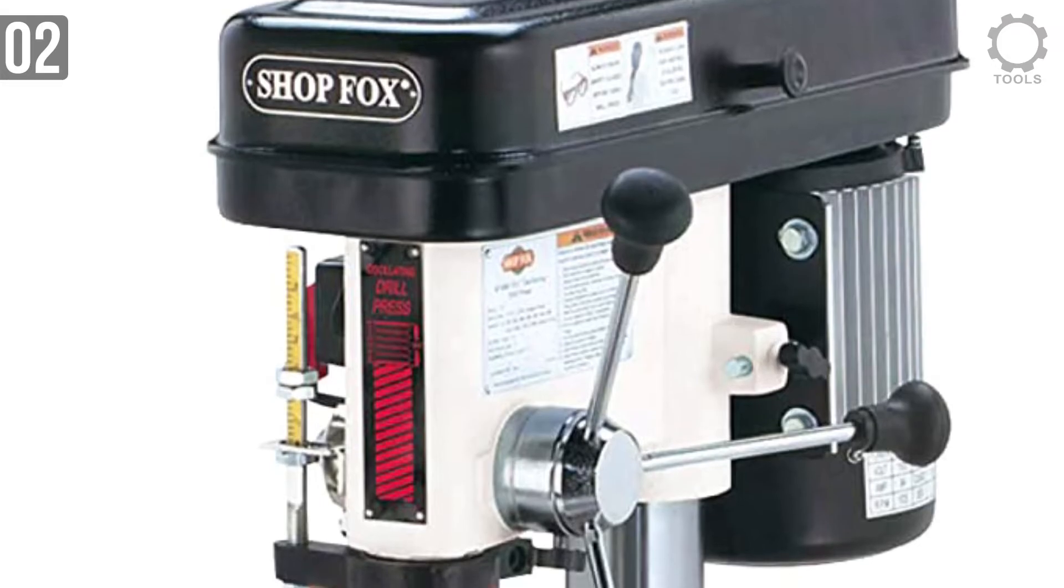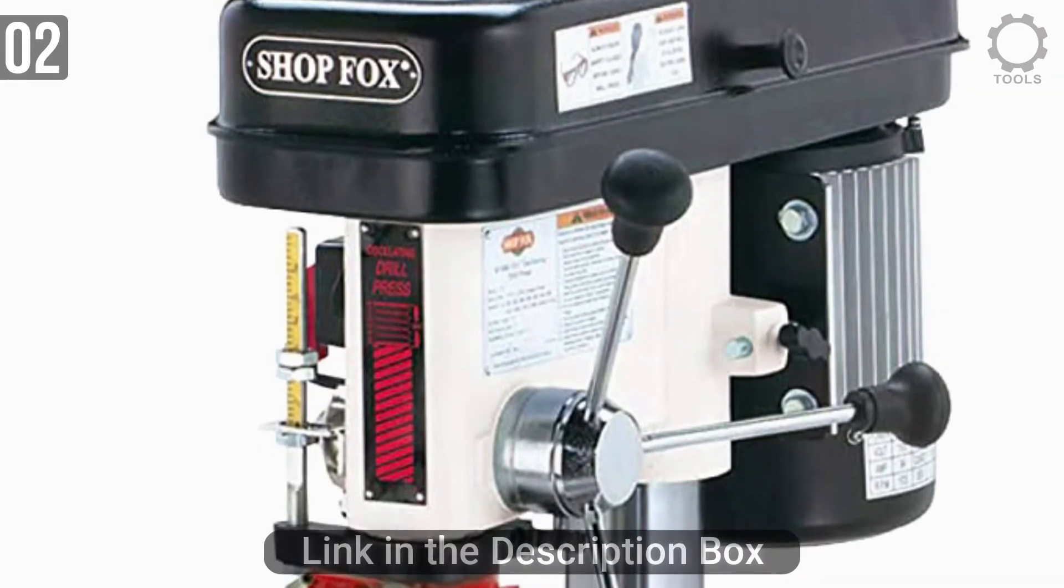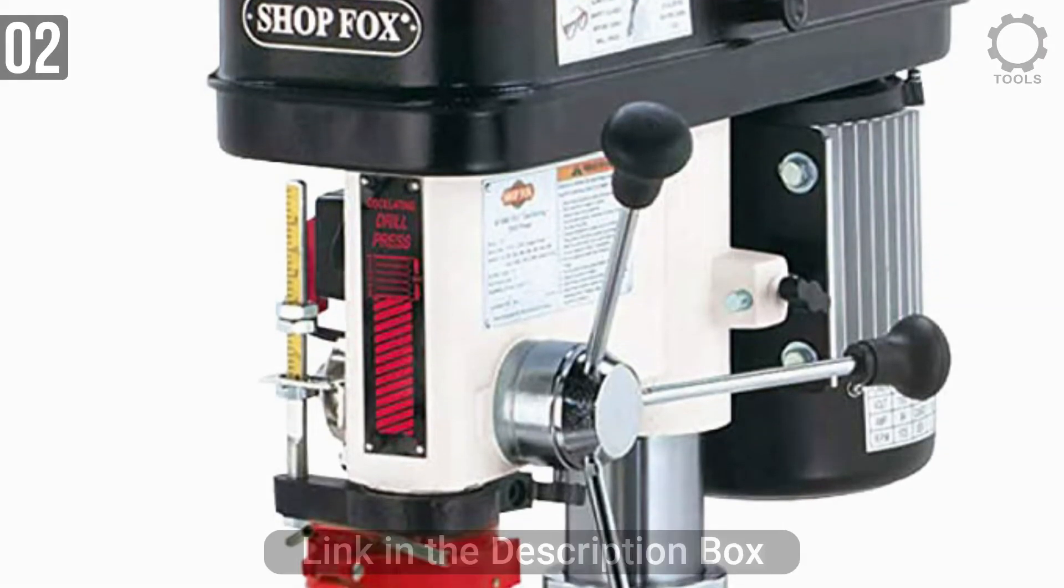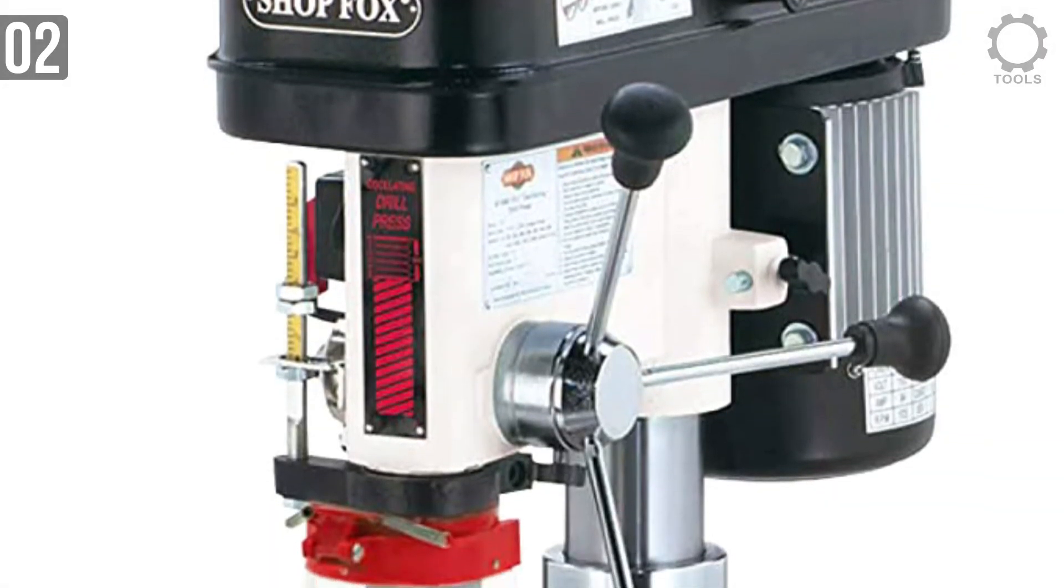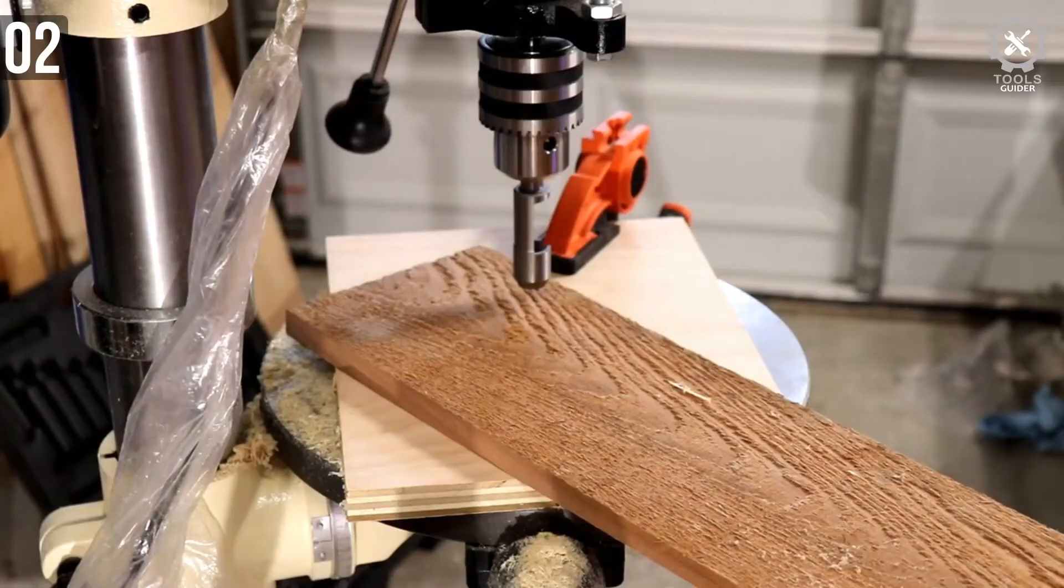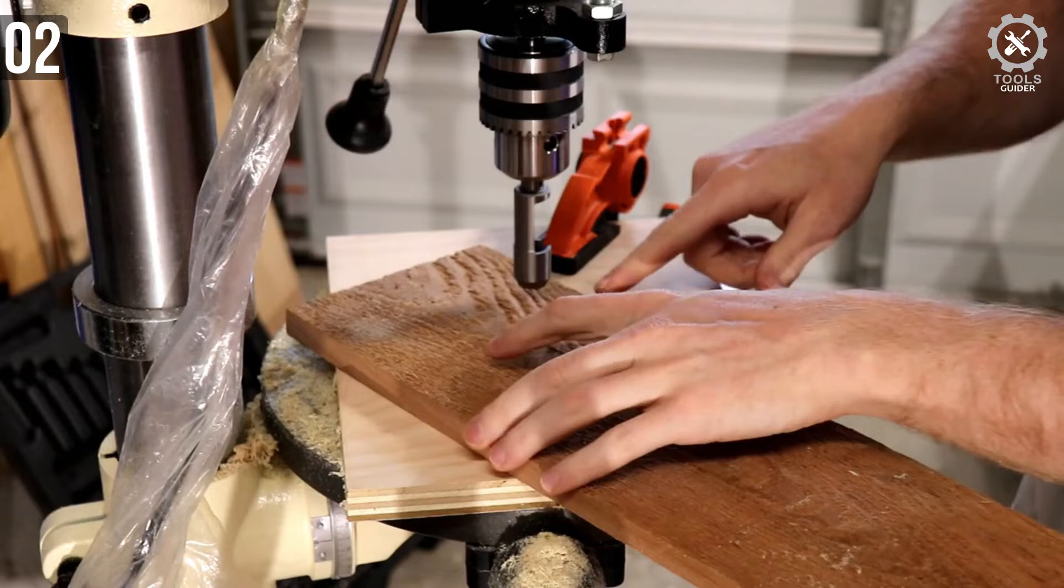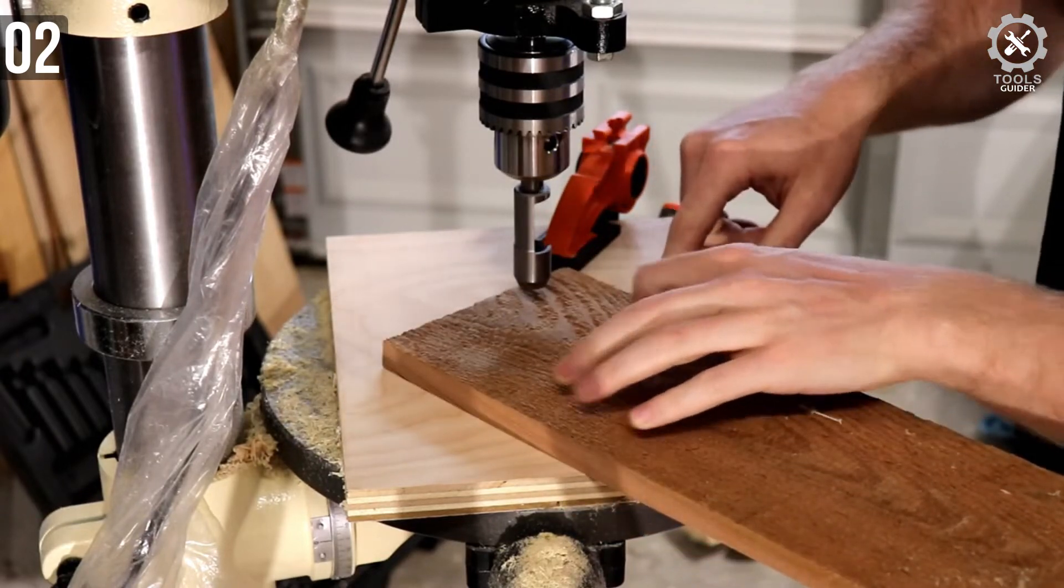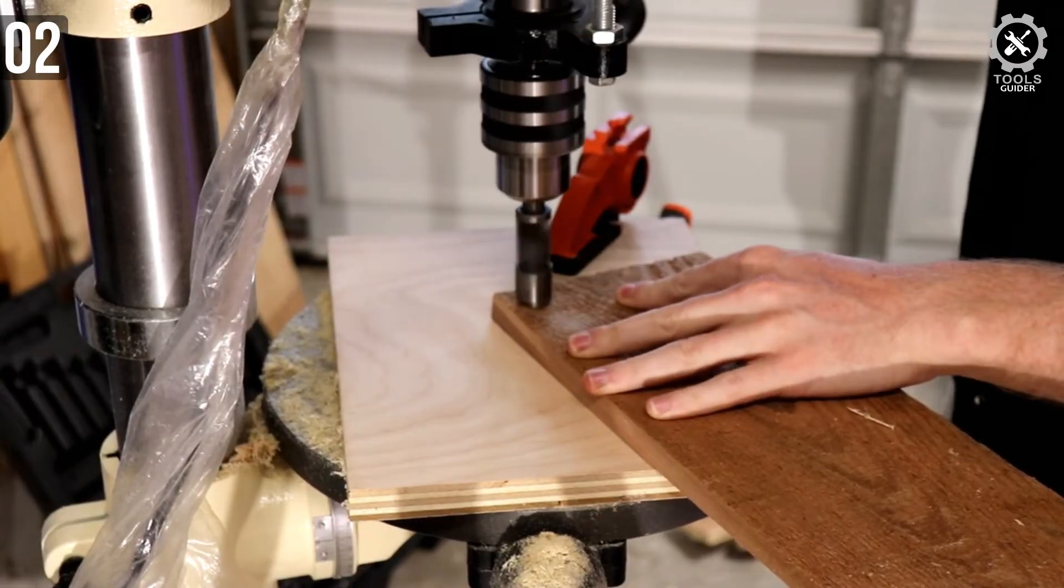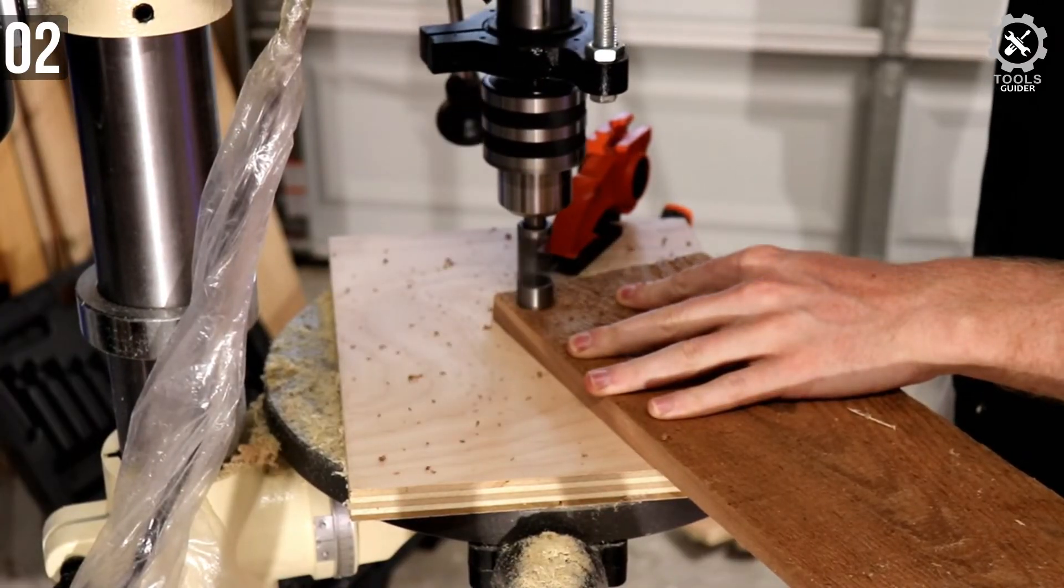As we said, the Shop Fox W1848 is powered by a 3/4 HP engine with a maximum speed of 3050 RPM. The fact that this is a variable speed motor provides the user with flexibility during work. Being able to select one of 12 different speed settings, 250 to 3050 RPM, greatly contributes to the model's overall versatility.